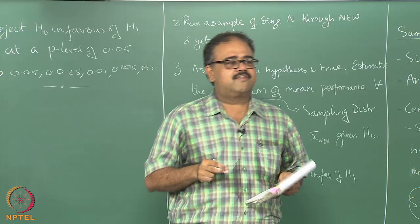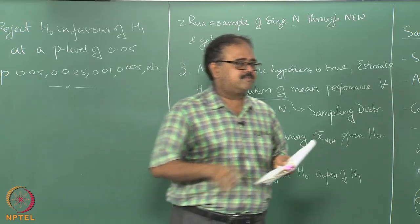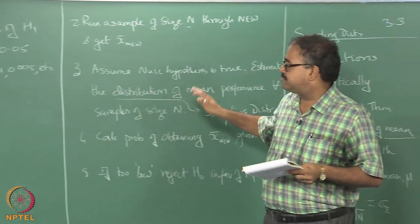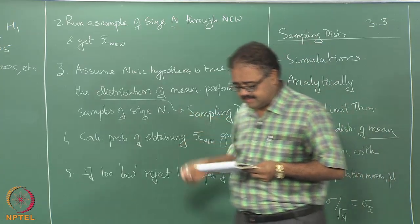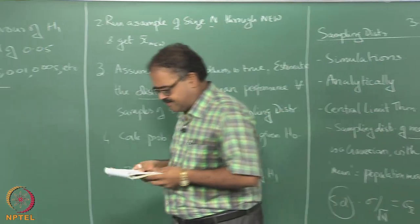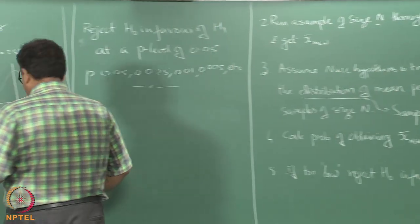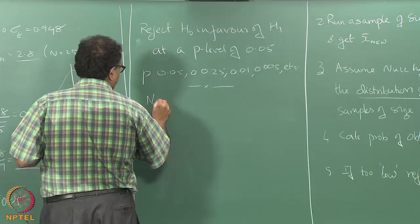ANOVA stands for analysis of variance, but I am not going to get into ANOVA methods — just the usual case where you are assuming means are different. So, what if n is small?